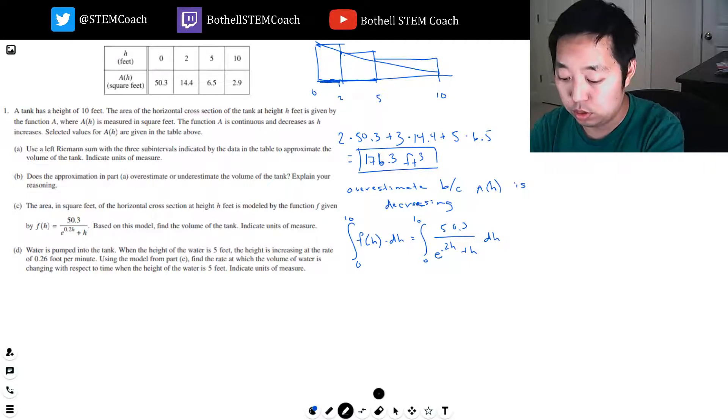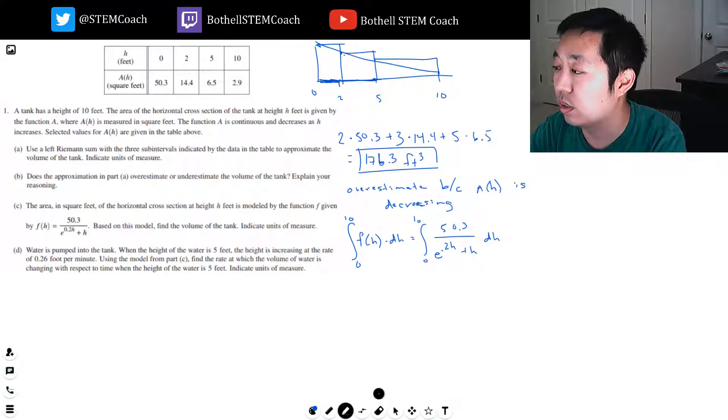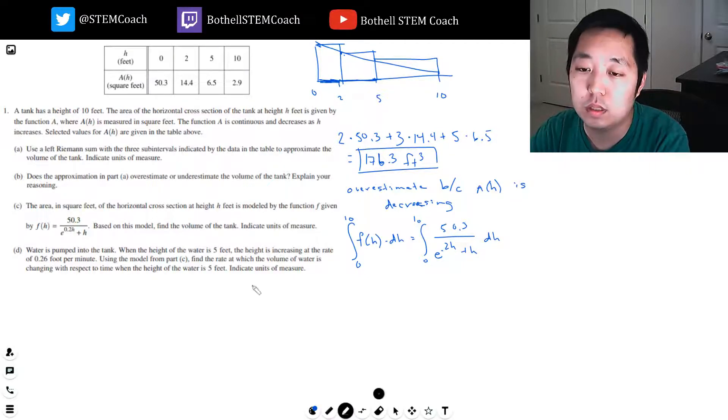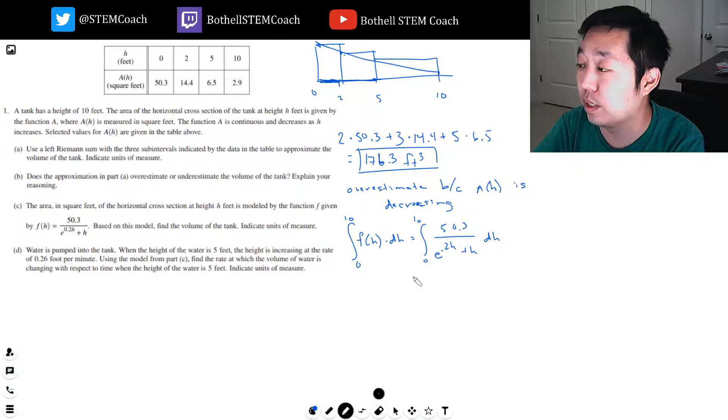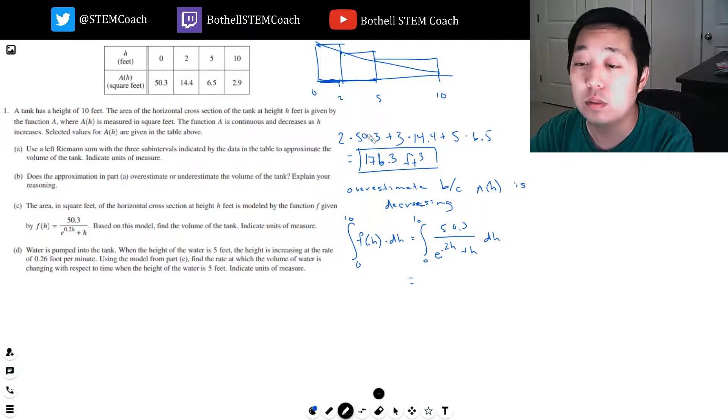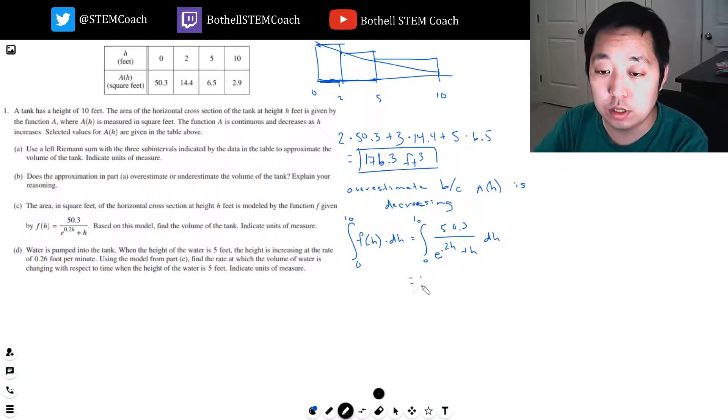I want to do 0 to 10. I don't really want to show you guys doing it on the computer just because it's not really that helpful. It's just computational. So we're skipping the step where I put this in the calculator. The approximation is 101.3 cubic feet.